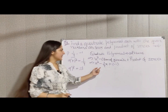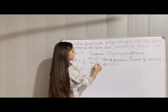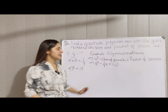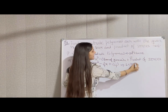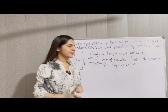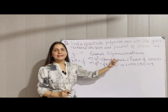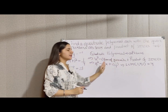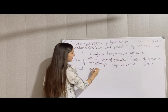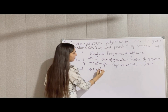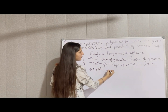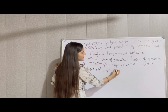Since we have a denominator of 4, we will take the LCM. The LCM of 4 and 1 is 4. We multiply the whole expression by 4.